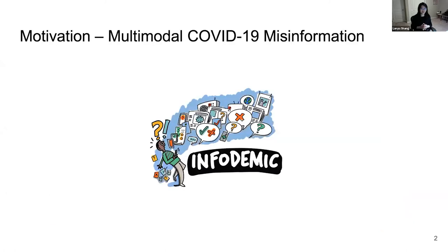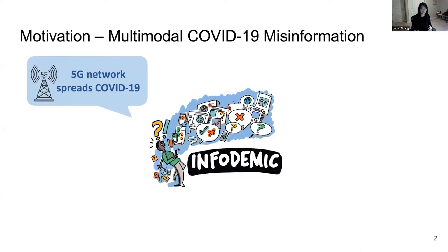Our work is motivated by the increasing trend of misleading information on the Internet. Among different topics in misinformation, COVID-19-related misinformation is a critical category that can lead to serious real-world consequences. For example, there are a few 5G cell towers that were destroyed by people who incorrectly believe that the 5G network can spread the COVID virus.